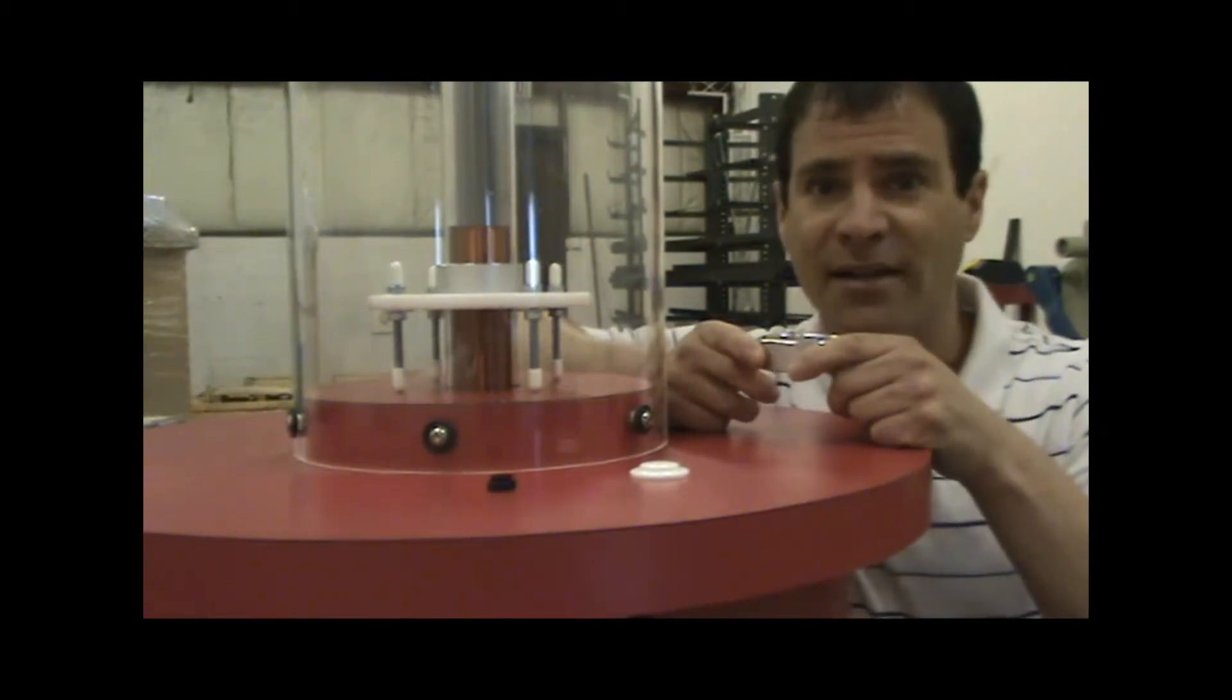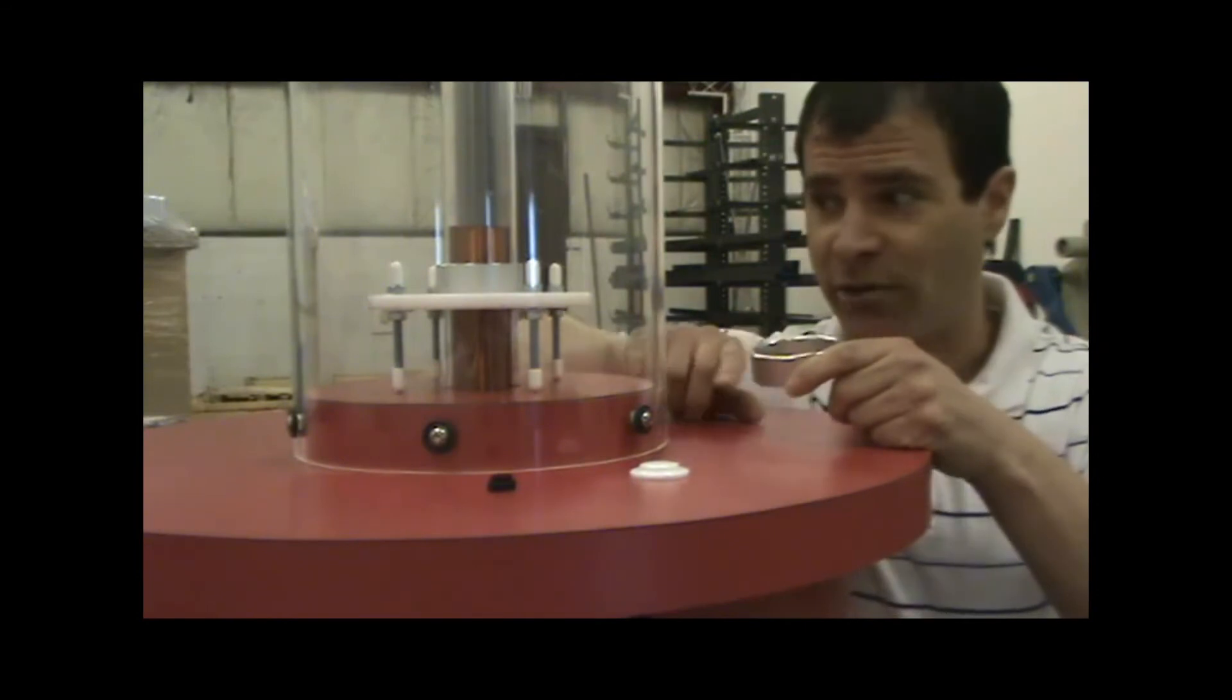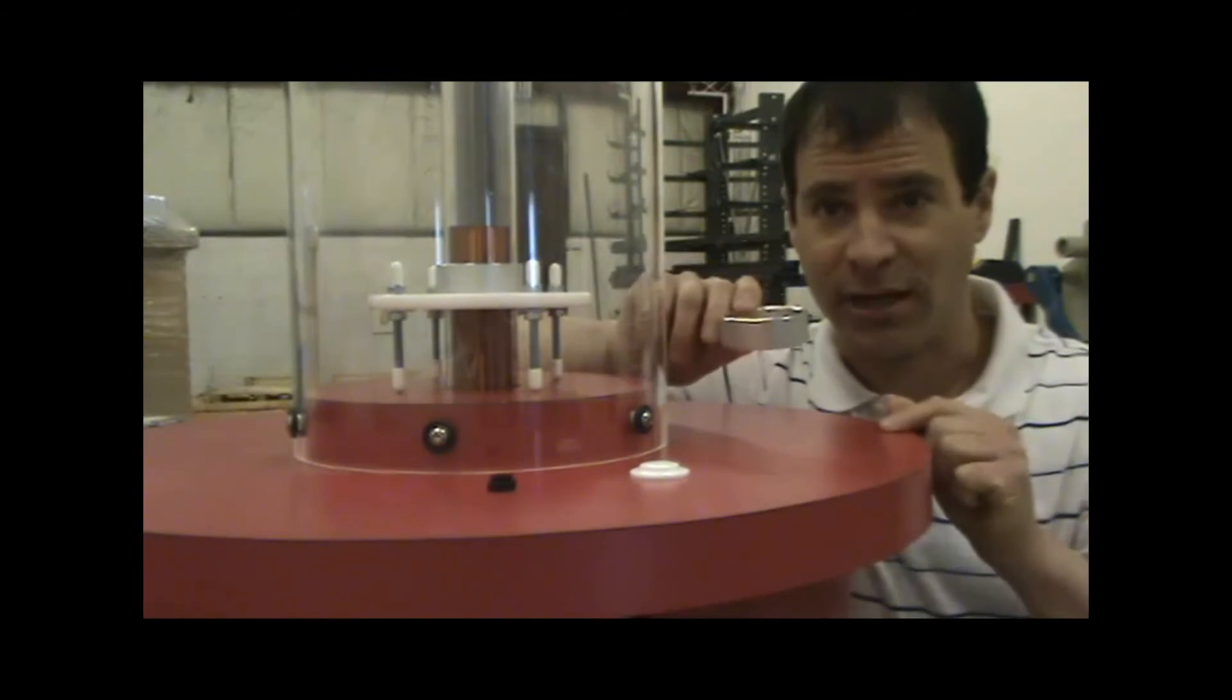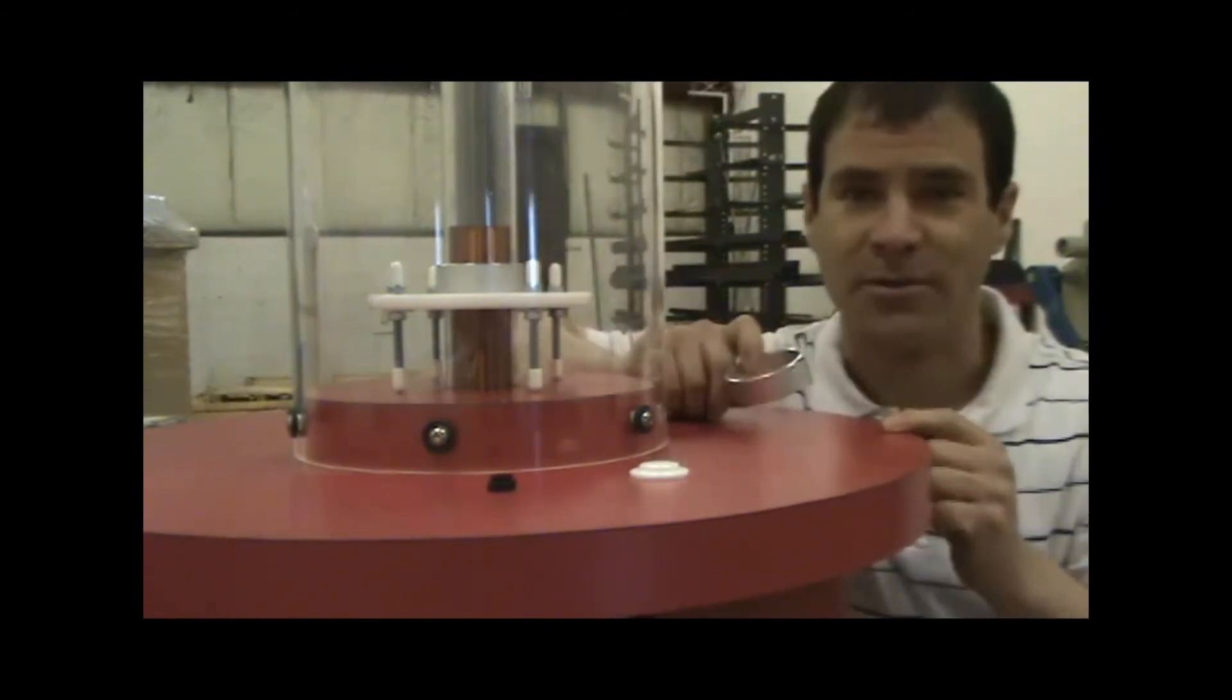Just like two magnets repelling each other, the magnetic field generated by the coil of wire repels the magnetic field in the ring and the ring therefore launches up into the air.